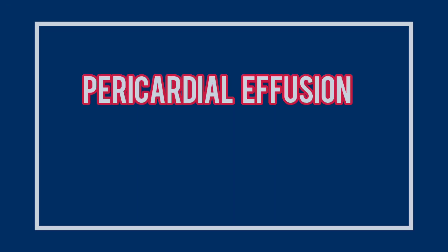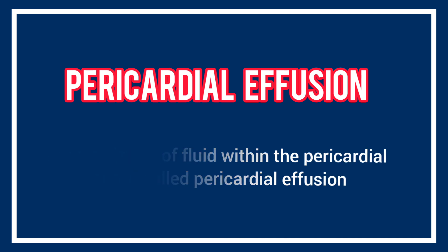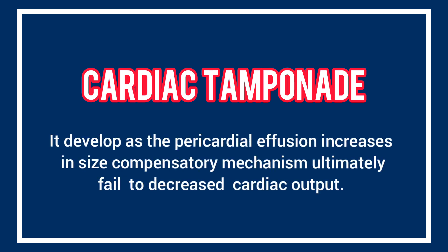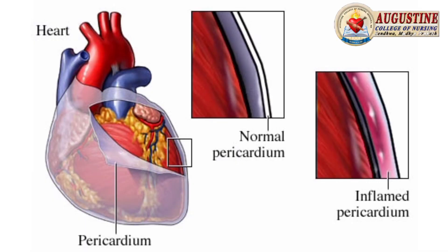Complications include arrhythmias, which may be due to irritation of the sinus node located close to the parietal pericardium. Pericardial effusion refers to the accumulation of fluid within the pericardial sac. Cardiac tamponade develops when pericardial effusion increases in size and compensatory mechanisms ultimately fail, leading to decreased cardiac output.